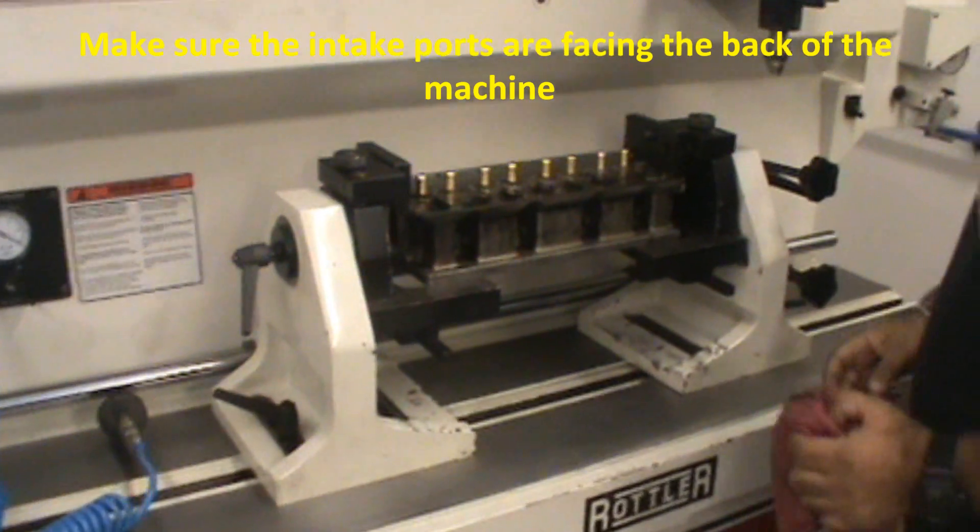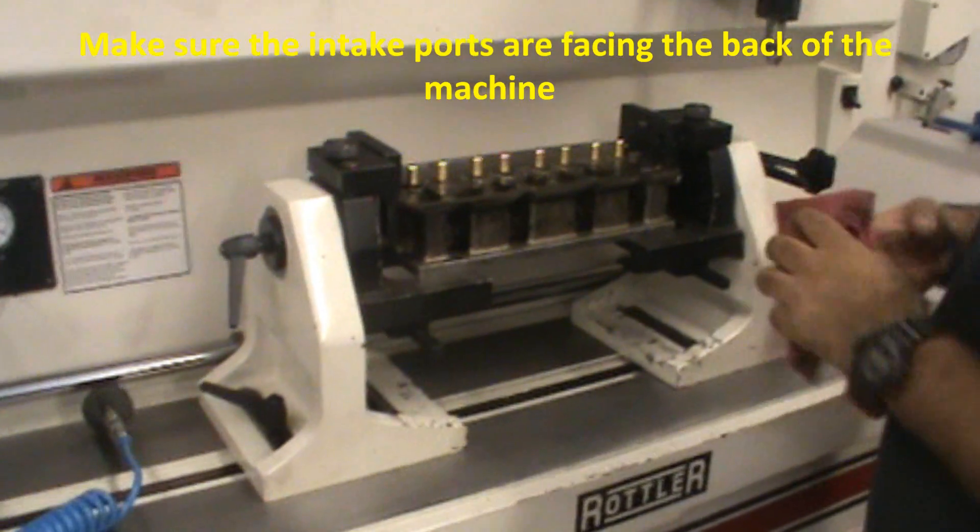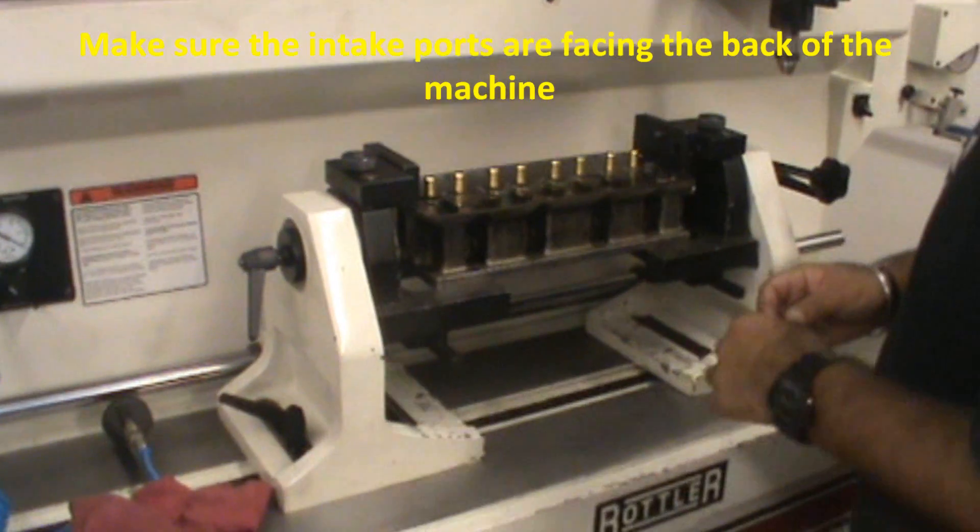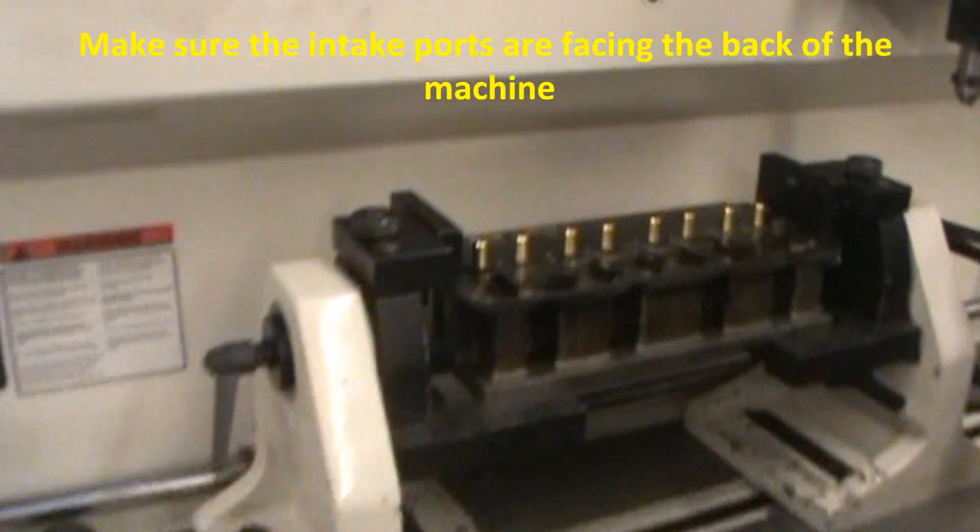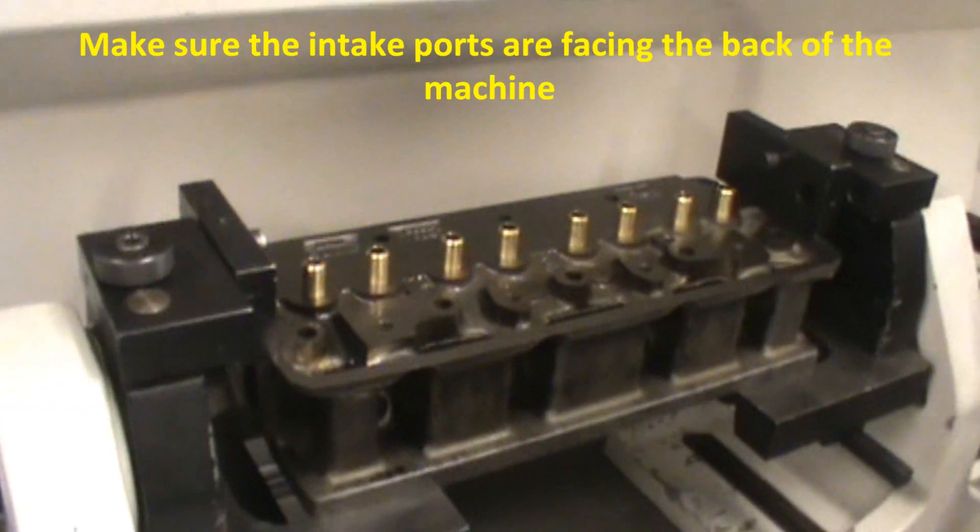All right, this is Anthony here at DIY Auto Tech. We're sitting here on the Rottler SG8 and we're going to be showing you how to grind some valve seats today. First step is to get your cylinder head set up on the machine nice and tight and get it centered.